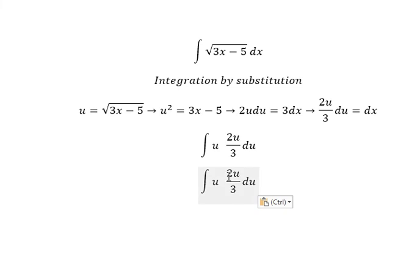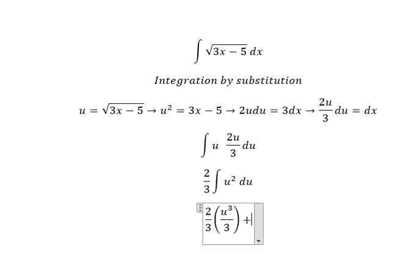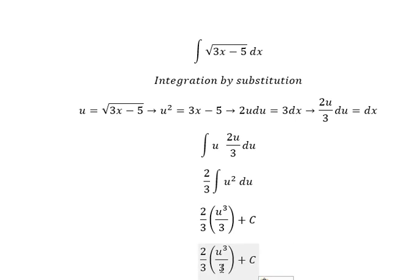So we have 2 over 3, we put outside u and u, we have u². The integration of u² we have u to the power of 3 over 3, and we put C. Number 3 and number 3 we have 2 over 9.